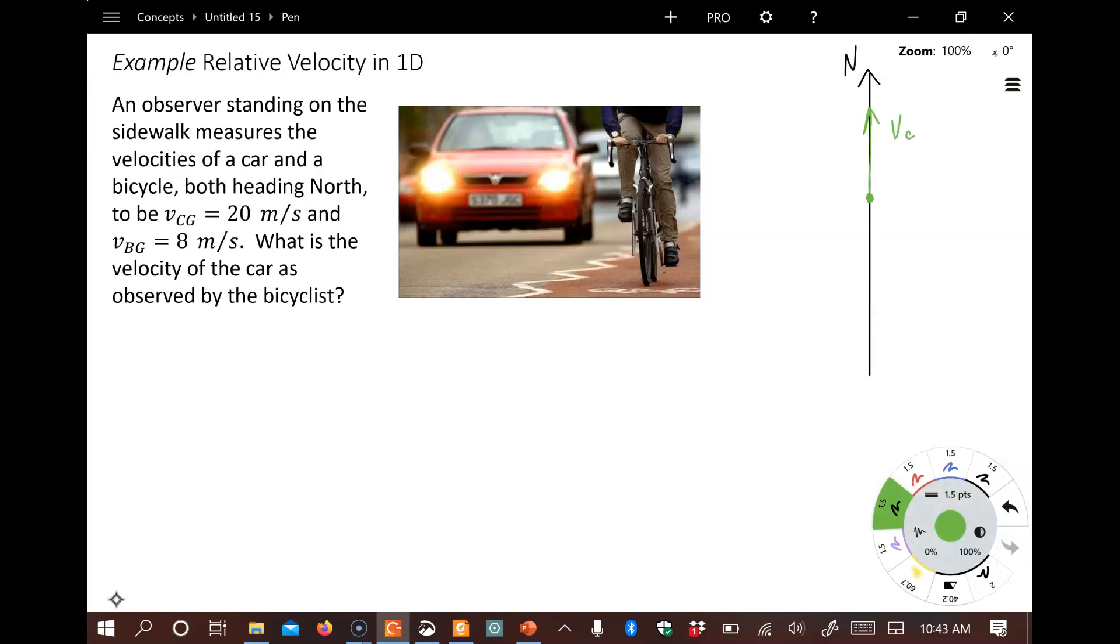And down here maybe we'll look at the velocity of the bike. Let's say it's a little bit behind there, and it's a shorter arrow because it's the bike. Now what we want to consider is that actually both of these are measurements made from the ground. So we write VCG for the car as measured, velocity is measured by the ground, and VBG as the velocity of the bike is measured by the ground.